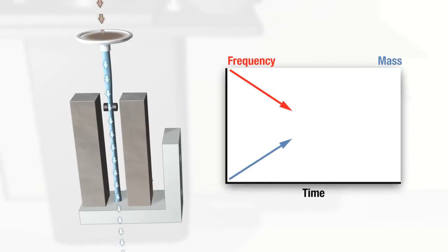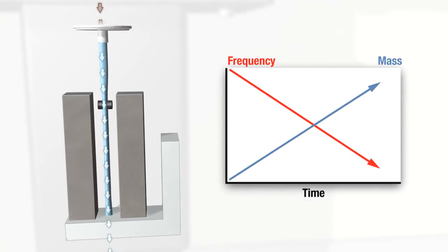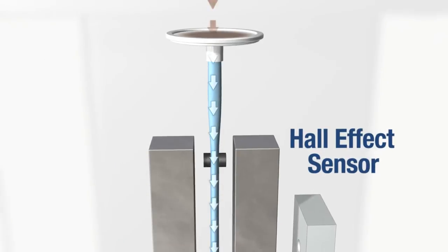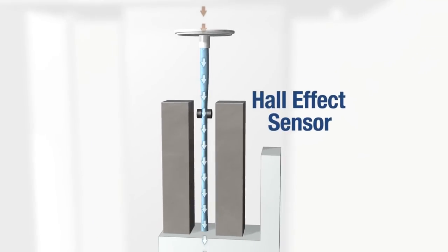Over time, particulate mass increases and weighs down against the TEOM, reducing oscillation frequency. The change in frequency is measured by the Hall effect sensor.